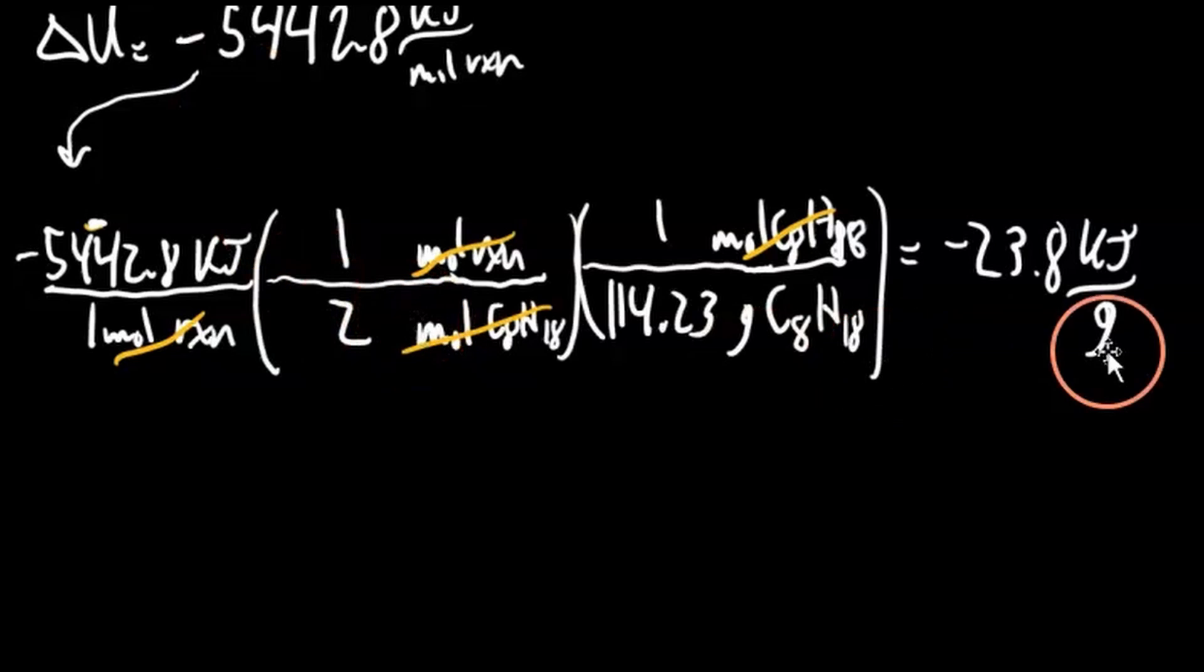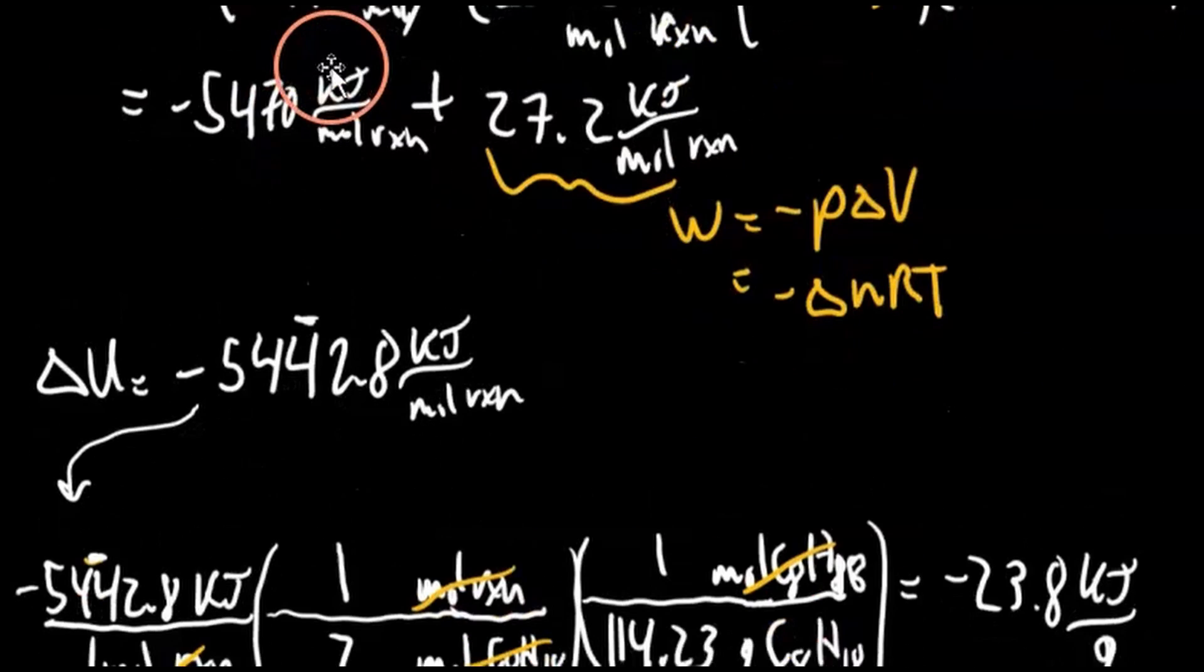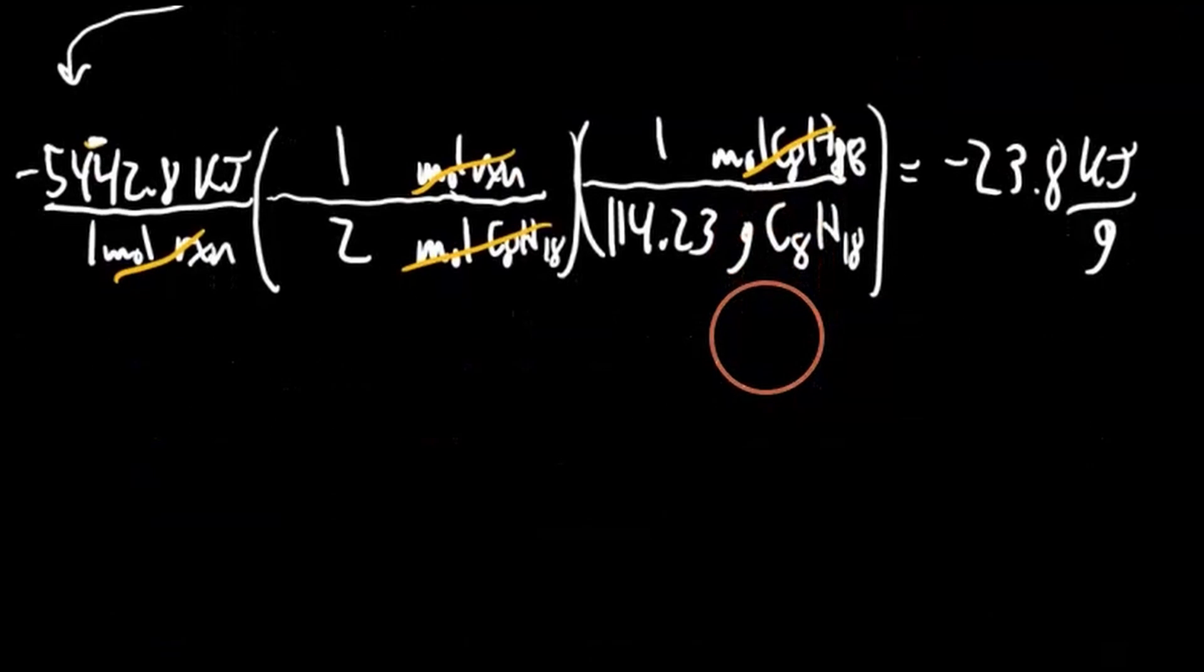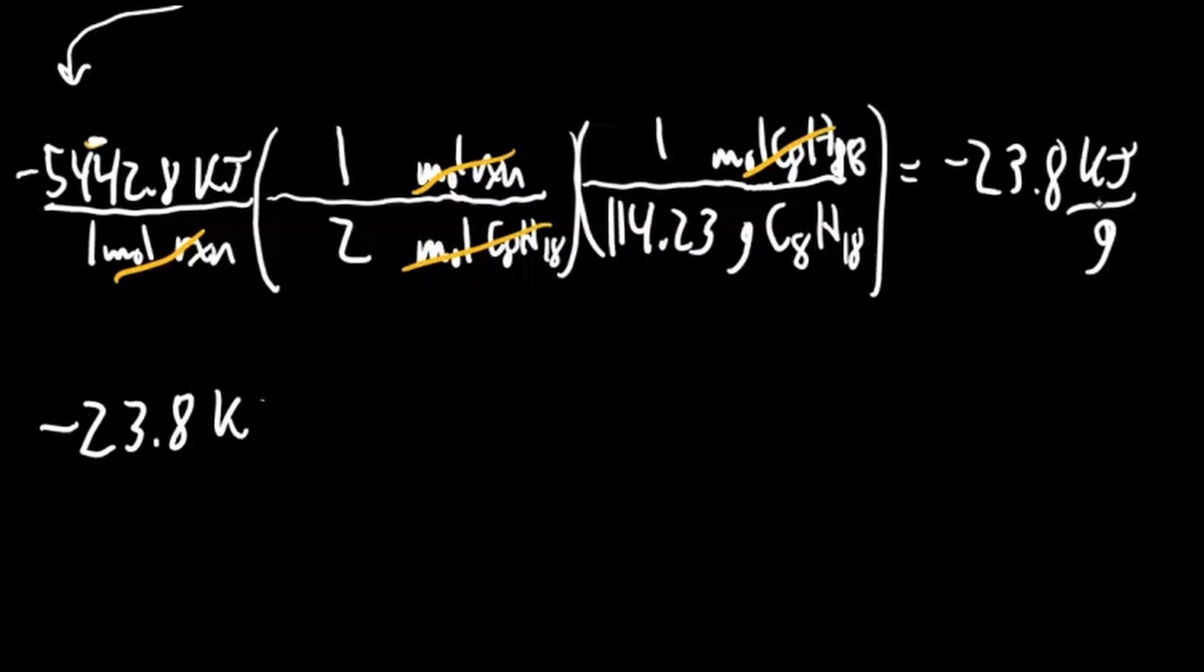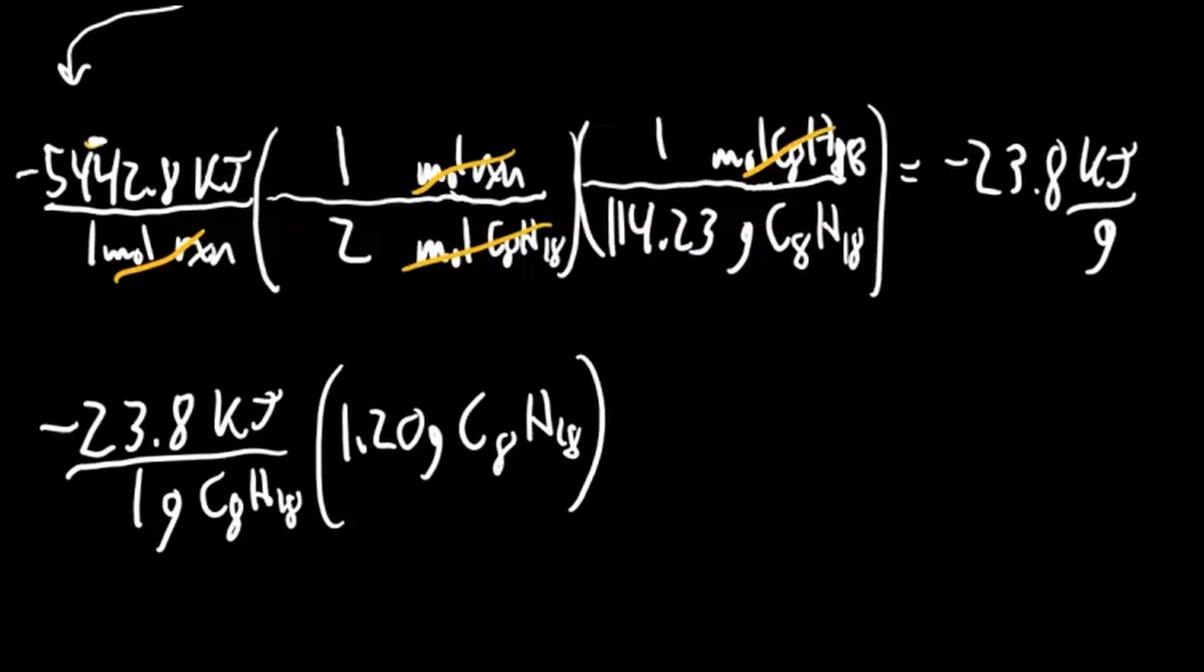We're not done. We want it per 1.20 grams of octane, not per gram of octane. So we've got to multiply it by 1.2. Negative 23.8 kilojoules per every one gram of C8H18. We want to multiply that by 1.20 grams of C8H18, so that our grams of C8H18 cancel out, and we're just left with kilojoules.